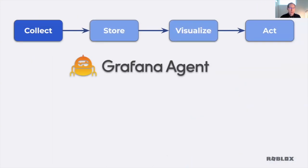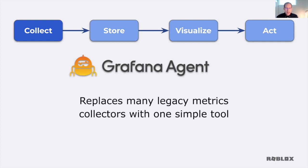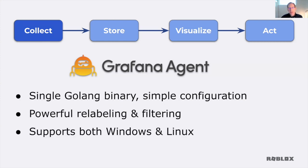I'm now going to zoom in on just the collection part of this unified architecture. Grafana agent plays a big role in the collection of data. Grafana agent allows us to replace legacy metrics collectors with one simple tool. It's a single Golang binary with a simple configuration file, so it's very easy to deploy. It has powerful features to relabel and filter metrics data so that, as we transition from a legacy system to our unified system, we can preserve compatibility by renaming or tweaking things to match the way the data used to look. It also supports both Windows and Linux — we have different generations of technology in use and we need to monitor all of it.